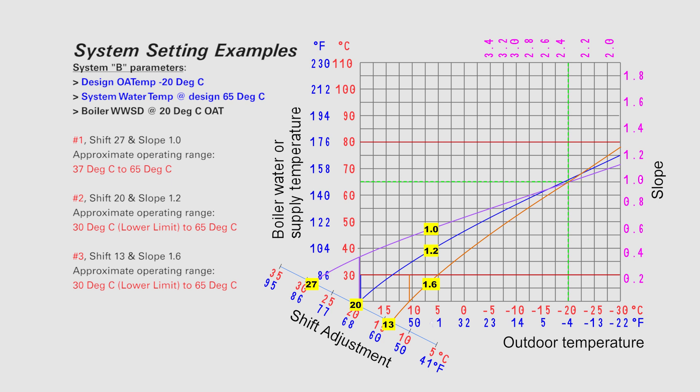Again, notice that in examples 2 and 3, the minimum boiler design temperature is maintained until a colder outdoor air temperature.